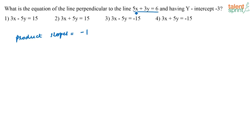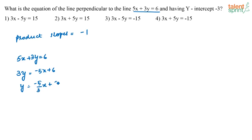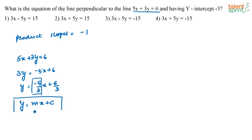So what is the slope of the line given to us? The line given is 5x plus 3y equal to 6. I can write this as 3y equal to minus 5x plus 6, or y is equal to minus 5 by 3 x plus 6 by 3. So the slope of this line is minus 5 by 3, because this is of the form y equals mx plus c. The slope of the first line is nothing but minus 5 by 3.